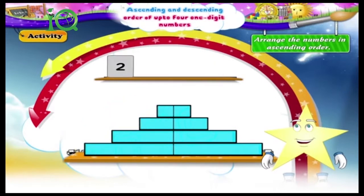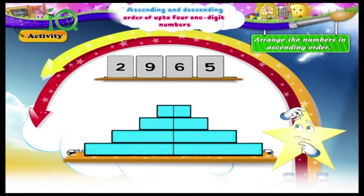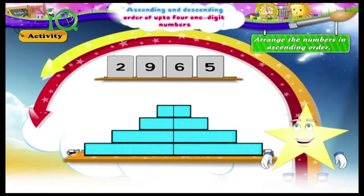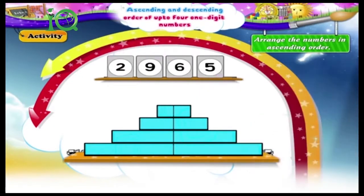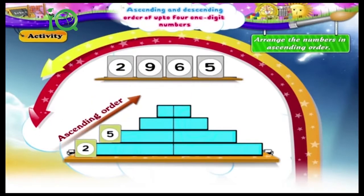Two, nine, six, five. What do you think is the smallest number, Starry? Yes, the smallest number is two. And the biggest number is nine. So between six and five, five is the smaller number. The numbers in ascending order are two, five, six, nine.